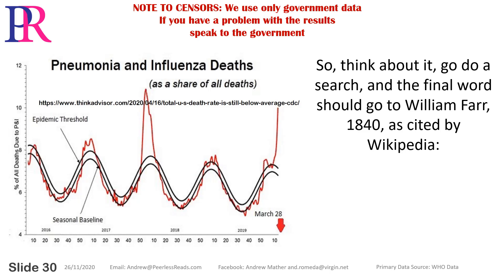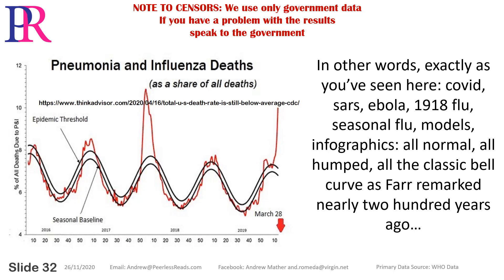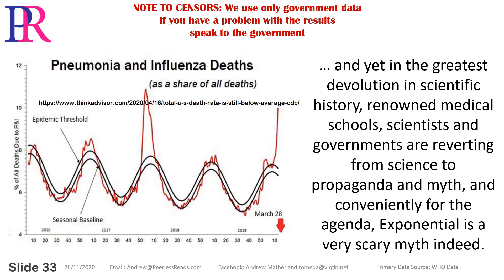So think about it, go do a search — and the final word should go to William Farr, 1840, as cited by Wikipedia. He showed that during the smallpox epidemic, a plot of the number of deaths per quarter followed a roughly bell-shaped or normal curve, and that recent epidemics of other diseases had followed a similar pattern. In other words, exactly as you've seen here: COVID, SARS, Ebola, 1918 flu, seasonal flu models, infographics — all normal, all humped, all the classic bell curve, as Farr remarked nearly 200 years ago.